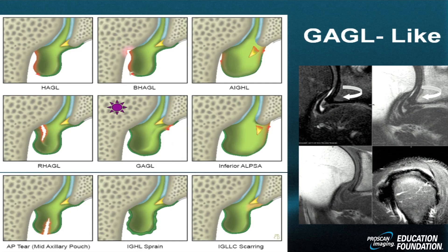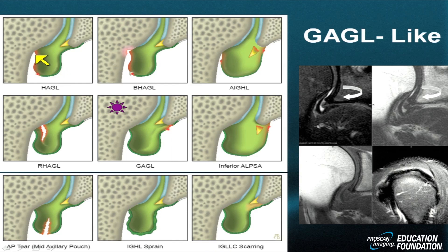We're going to cover both anterior and inferior syndromes. As a quick review, we have the HAGL lesion — the humeral avulsion of the glenohumeral ligament. Here is the inferior glenohumeral ligament, and there is the injury in orange from the humeral neck — the humeral avulsion.